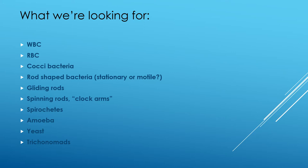So here's what we're looking for on the slide and these are the things you need to be able to identify. White blood cells, red blood cells, cocci bacteria, rod-shaped bacteria, and note if they're stationary or motile. We're looking for also gliding rods. And again, are they gliding or are they drifting? Spinning rods. Some spinning rods or gliding rods or motile rods look like what we call clock arms. Spirochetes, amoeba, yeast, and trichomonads, which are rather rare.